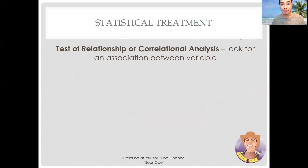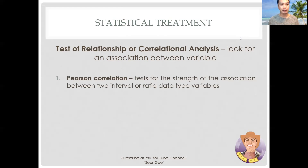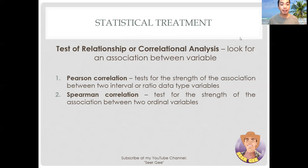Now let us move on to the test of relationship. There are three common statistical tests for measuring association or relationship between two variables. First is Pearson correlation — use this when handling interval or ratio-type data. Second is Spearman correlation — when calculating a correlation coefficient for ordinal data, you need to select Spearman's technique. Third is chi-square — use this when you want to test for the strength of association between two categorical variables.